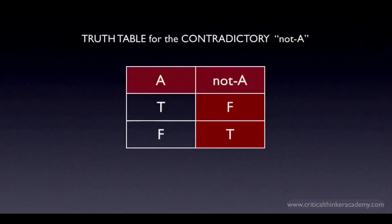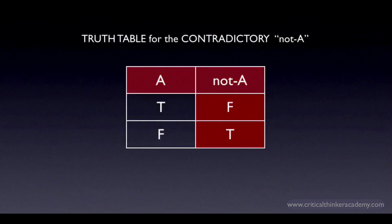Here's the truth table for the contradictory. It's pretty simple: whenever A is true, not A is false, and vice versa. The definition is simple, but the concept is important, and it isn't trivial when you're looking at real-world arguments involving more complex claims.